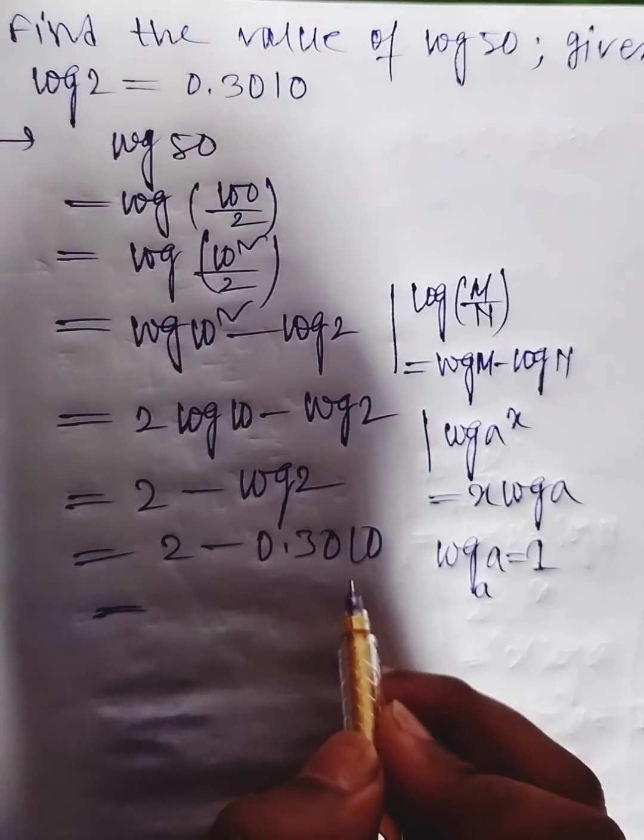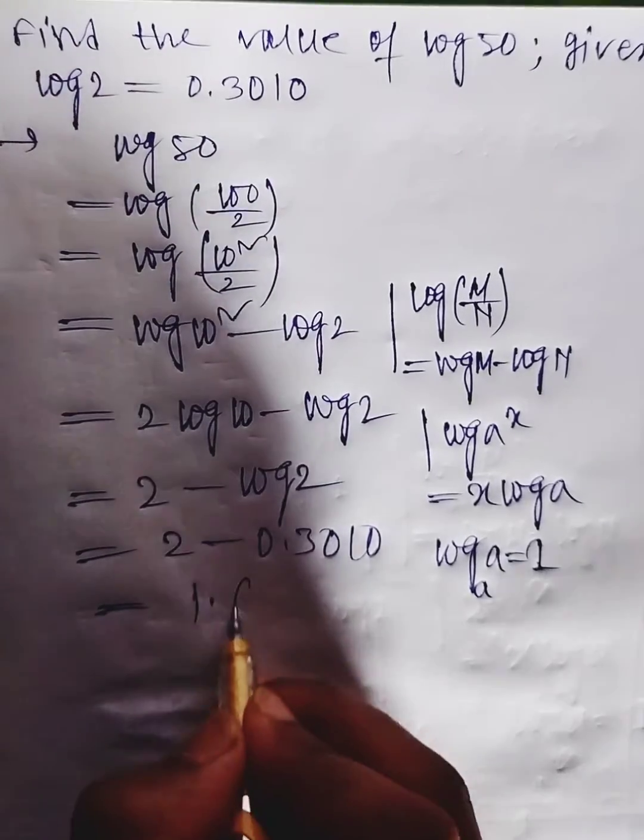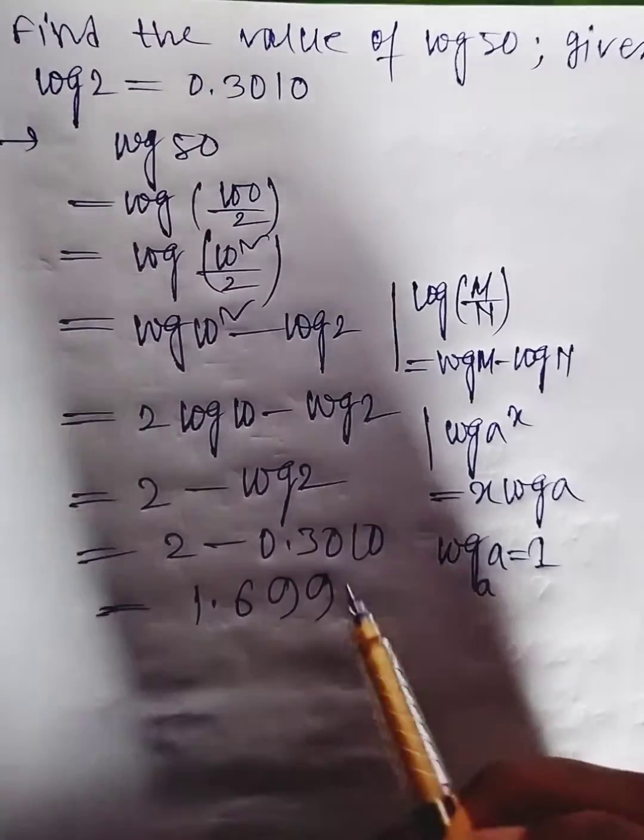By subtracting 0.3010 from 2 we get 1.699. This is the value of log 50.